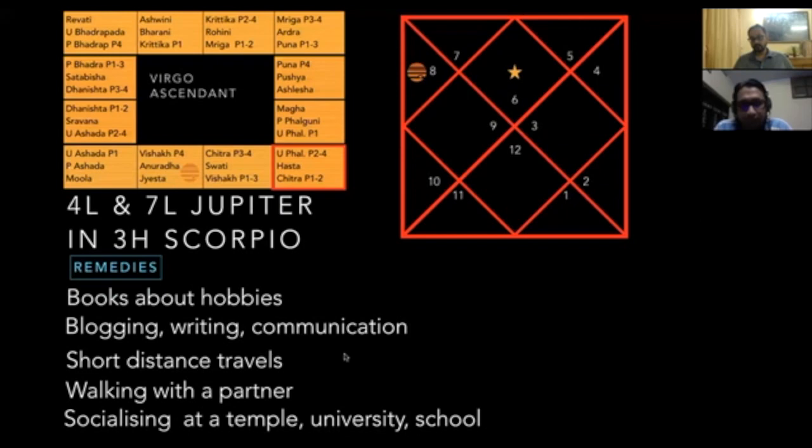It's 11th house lord for Virgo in the third house, so definitely I think short travels, short distance travels, or taking up maybe a sales role in your workplace. Also writing and publishing, third house is also writing and publishing. So that might really help the Virgo ascendants.